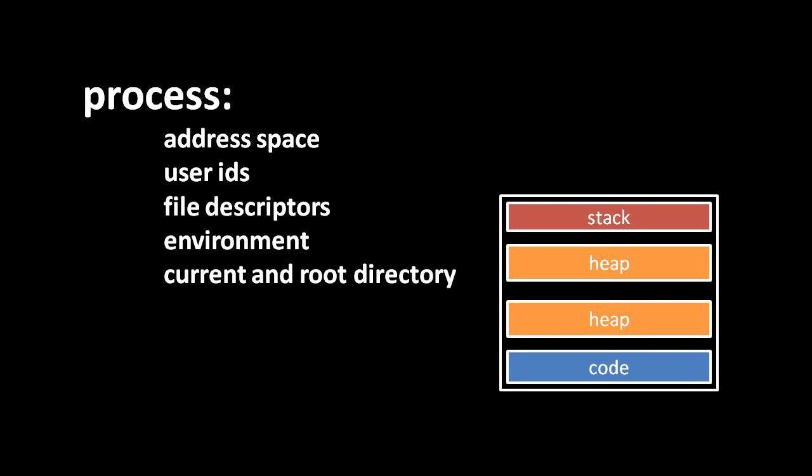For every process currently in the system, the operating system keeps a data structure that tracks all things associated with that process. Those things include, first of all, an address space — the memory table which is loaded when that process is running. But processes also include things we haven't yet discussed, including user IDs, file descriptors, what's called the environment (basically a small amount of data associated with the process), and each process has an associated current directory and a root directory.